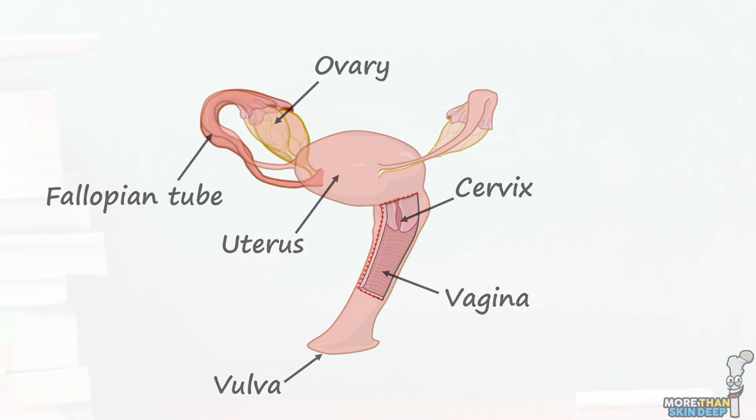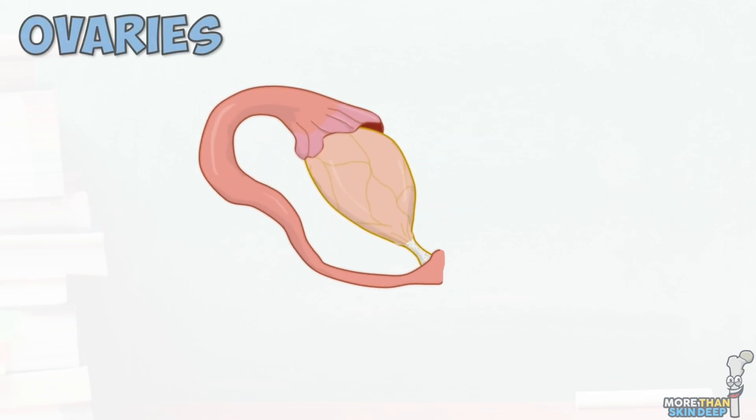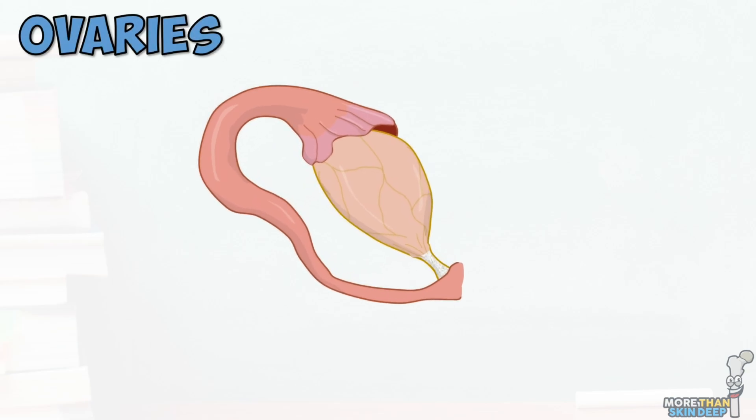Let's start at the ovaries. These are the paired female gonads and are similar structurally and functionally to the testes in the male. They are extremely important in producing and releasing the egg, or oocyte, and in acting as endocrine organs to produce oestrogen and progesterone.